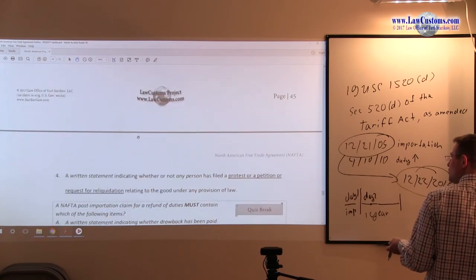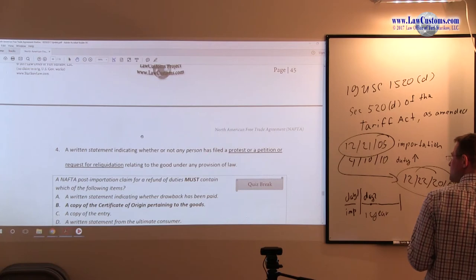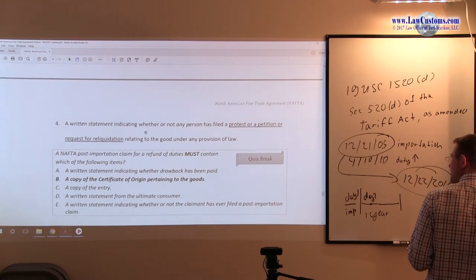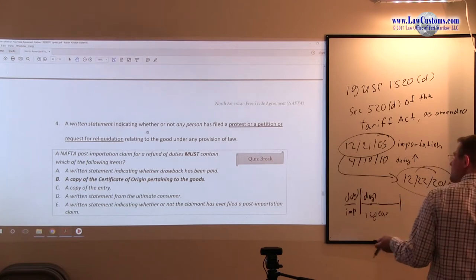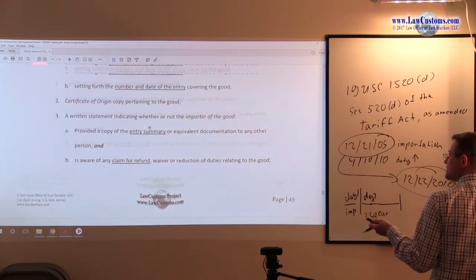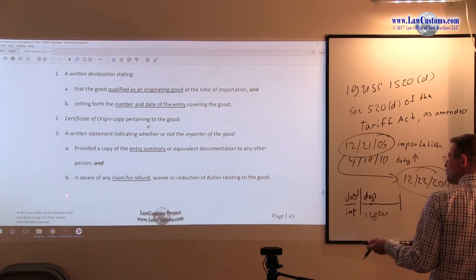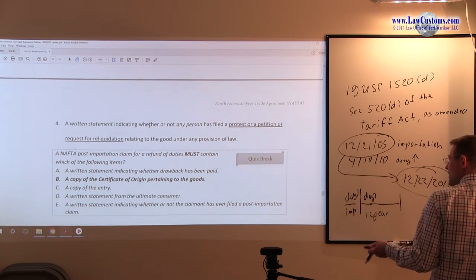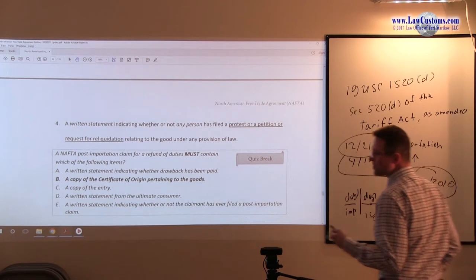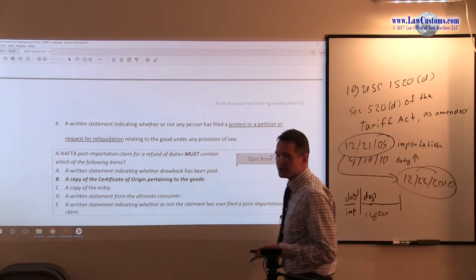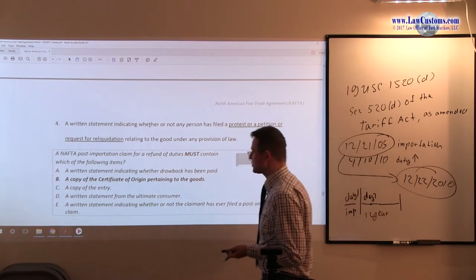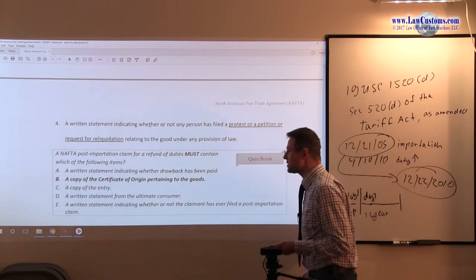The fourth section is a written statement whether the protest or request for the graduation has been filed. So notice, this is a laundry list, one through four, and customs usually test on laundry list by providing you a question which is not. So all of the stuff will be included in the laundry list but with that one particular question. So let's see how it's been tested.